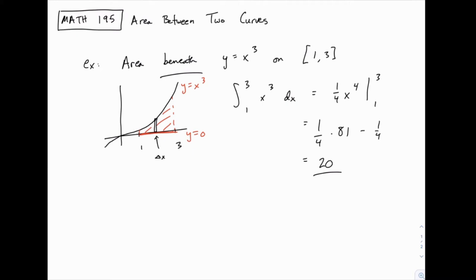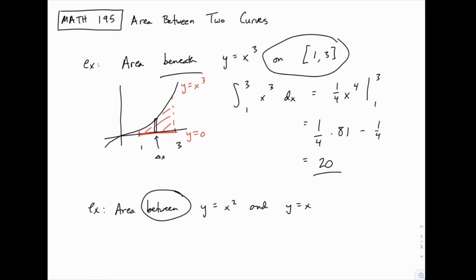Now if we make a different function our lower boundary, let's say we want the area between y equals x squared and y equals x. Notice the difference: before we were given a specific interval with left and right bounds. This time we're not given those boundaries, so we have to think about how to handle that separately. As you work through this section, you could be given limits of integration or not, and you need to know what to do in either case.